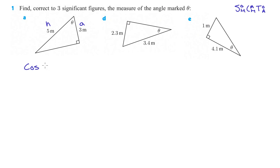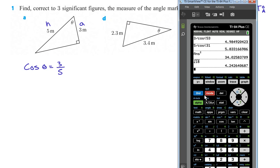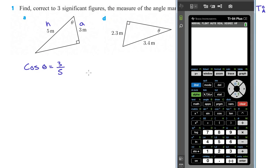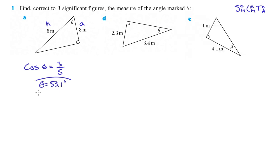We're going to do this: cosine of theta equals — cosine is adjacent, which is 3, over hypotenuse, which is 5. We'll use our handy-dandy graphing calculator. If you're looking for an angle, you have to do second cosine, because we're doing the inverse of cosine — we're given the ratio and we want the angle. So second cosine of 3 divided by 5 equals 53.1 degrees to three significant figures. Theta equals 53.1 degrees.